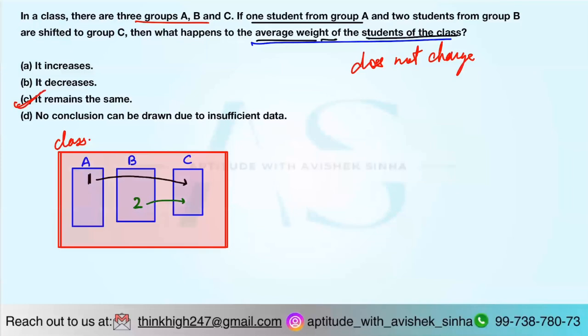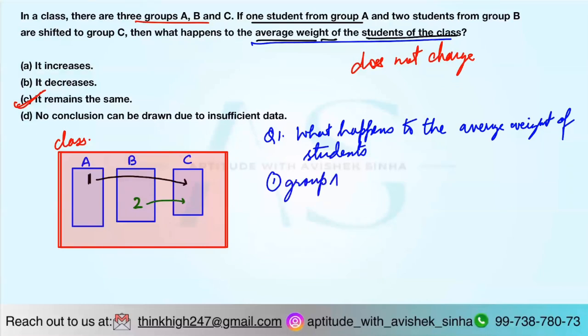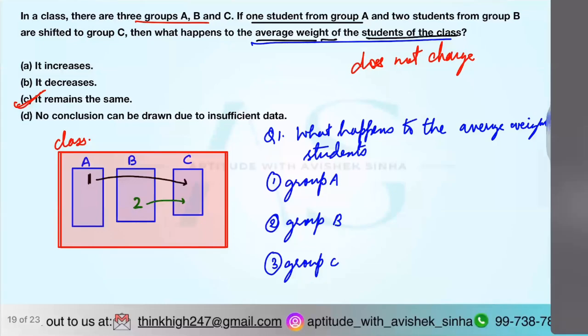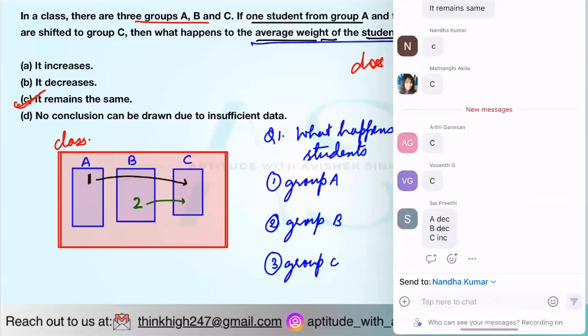It remains the same. Now, in the same question, if I ask you what happens to the average weight of students of group A, group B, and group C, please tell me respectively for 1, 2, and 3. If you have understood the question, please respond for the other three questions that I have taken.